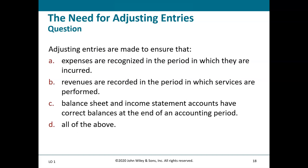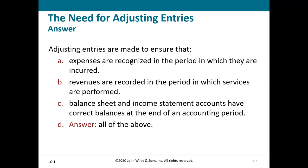Question: Adjusting entries are made to ensure that — a) expenses are recognized in the period in which they are incurred, b) revenues are recorded in the period in which services are performed, c) balance sheet and income statement accounts have correct balances at the end of an accounting period, or d) all of the above. The answer is D — all three are correct reasons for adjusting entries.